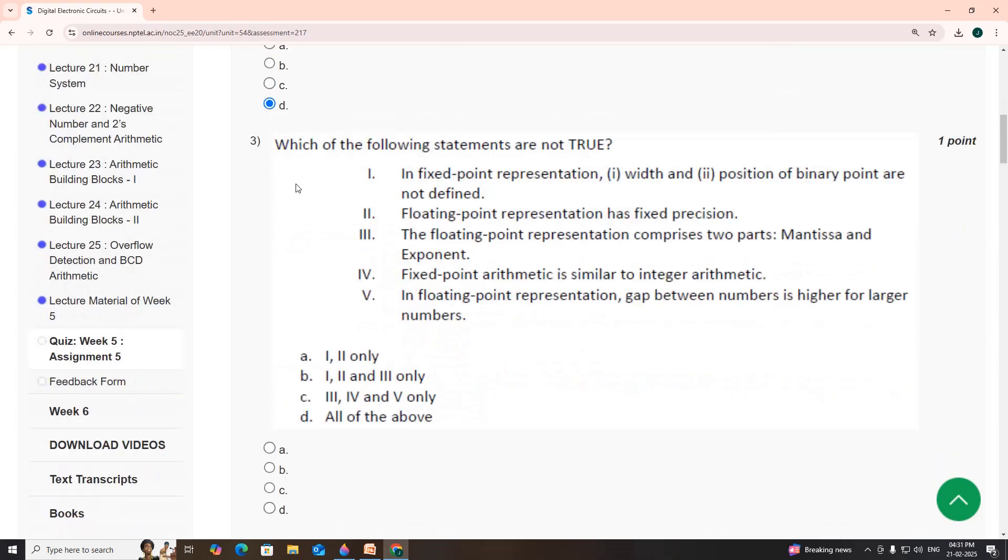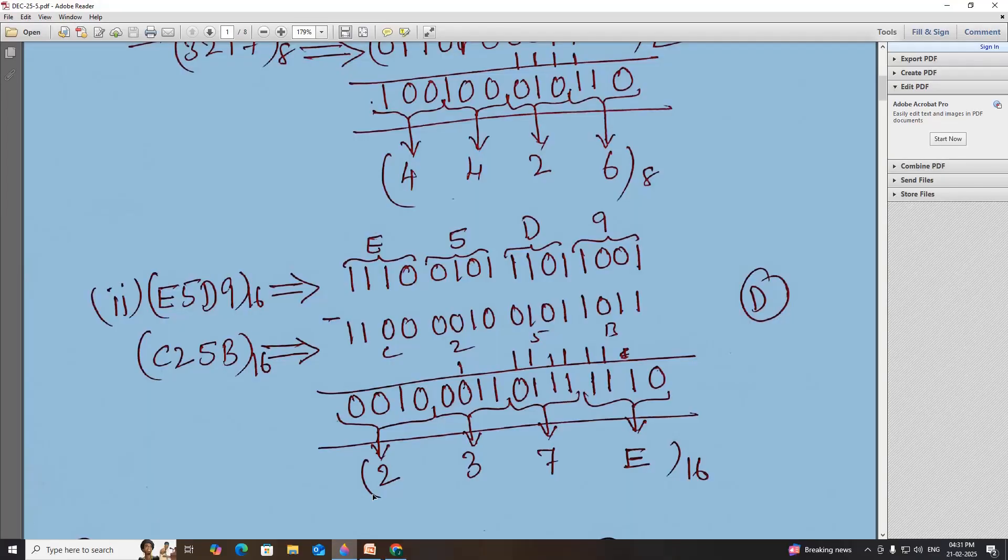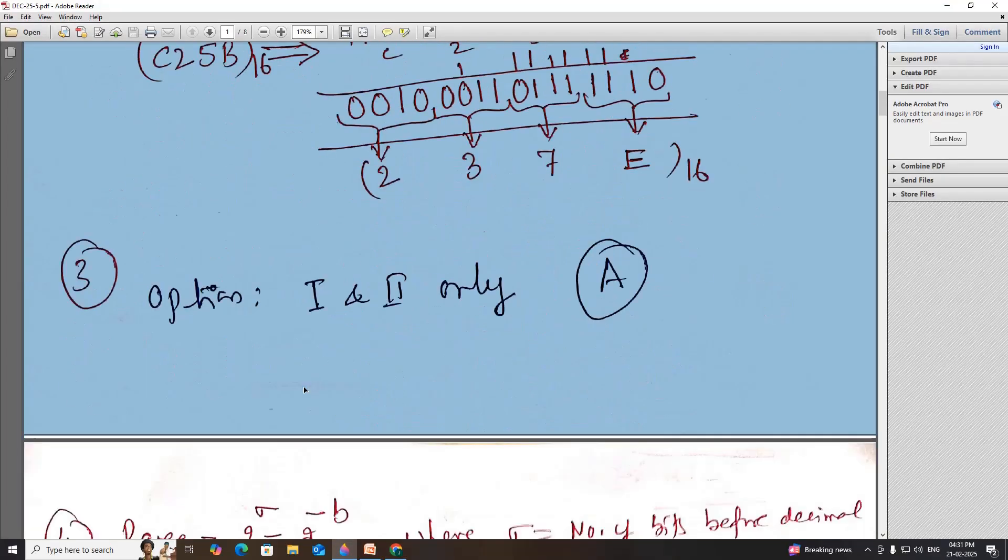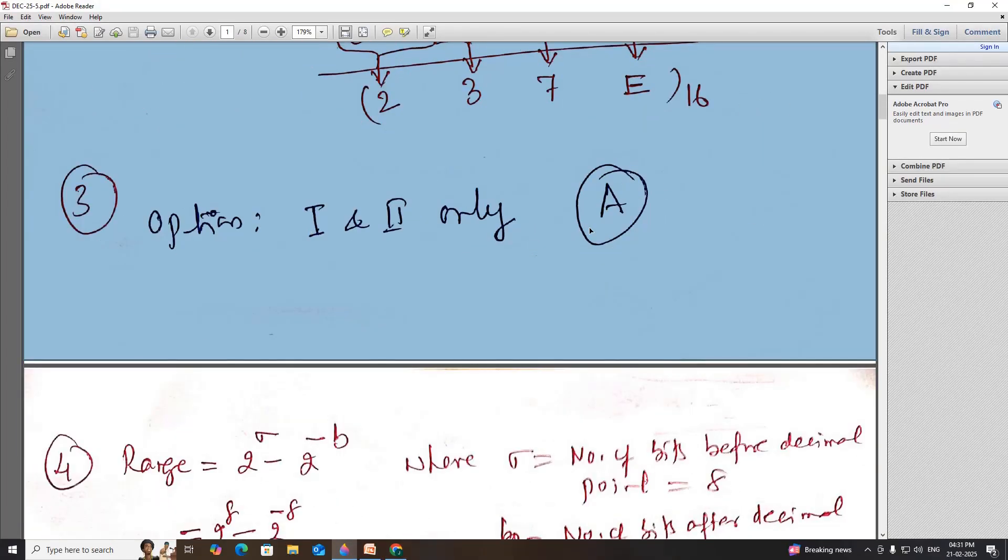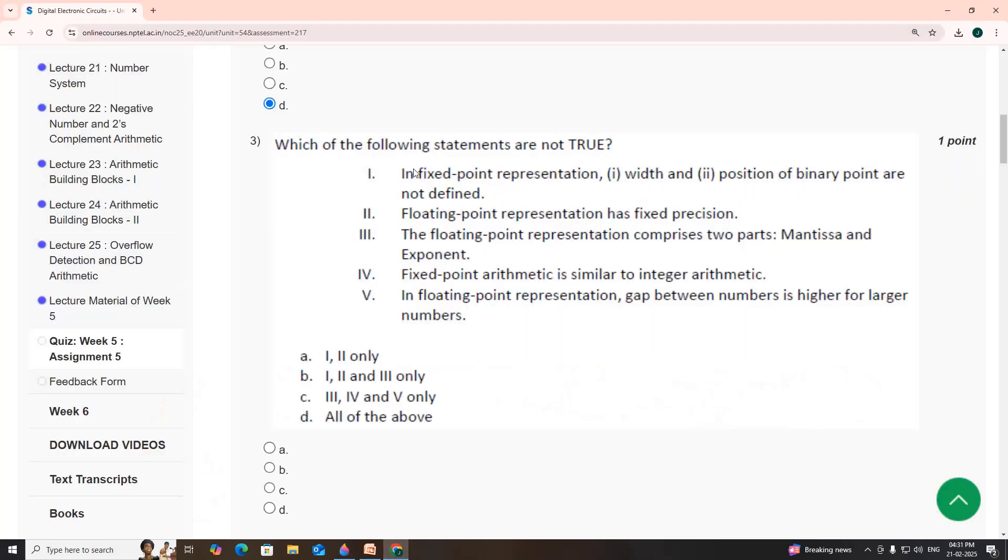Which of the following statements are not true? Option A, 1 and 2 only. In fixed point representation, width and position of binary point are not defined. Actually they are defined, not true. Floating point representation has fixed precision. No, it is a variable precision. So option A.